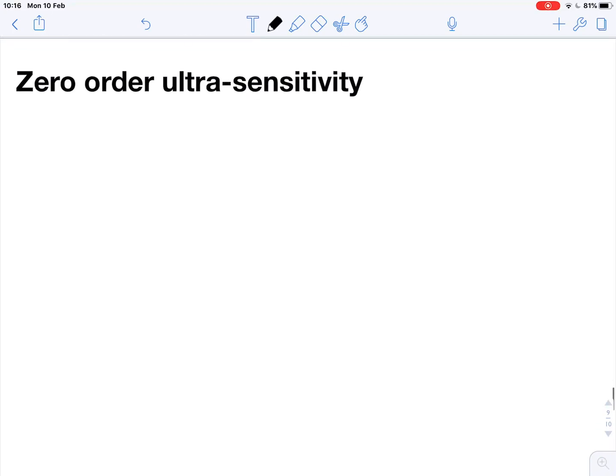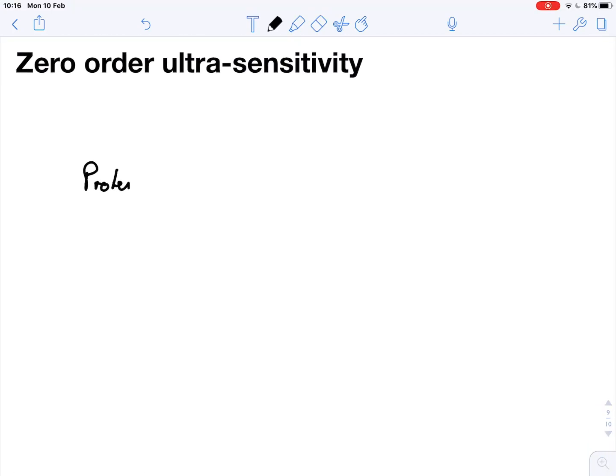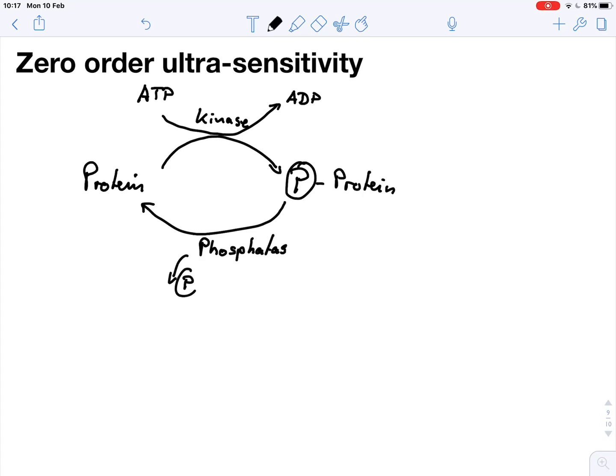Now, Zero Order Ultrasensitivity is something that has only quite recently been understood, although it's been around for a long time. So what is it? Well, let's assume we have a protein and this protein is phosphorylated. So we get a phosphoprotein, and the enzyme that is responsible for this reaction is a kinase.